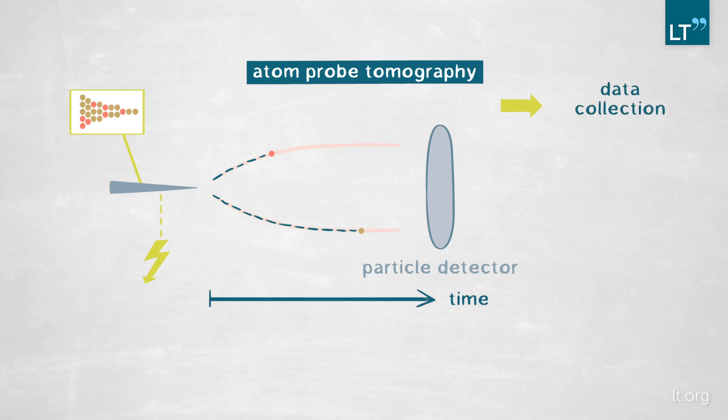So we collect these atoms, one after the other, a bit like we are peeling an onion, and we collect all of this data, and then we use a very powerful computer to reconstruct every atom at its original position.